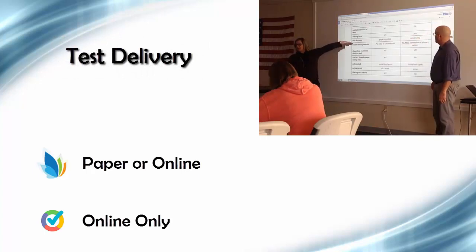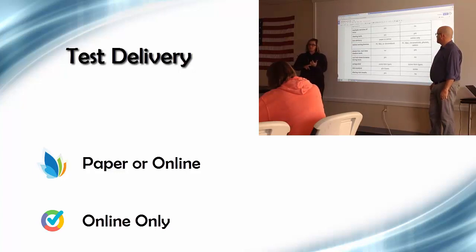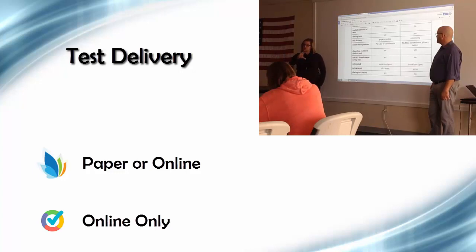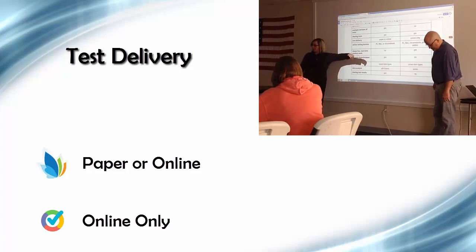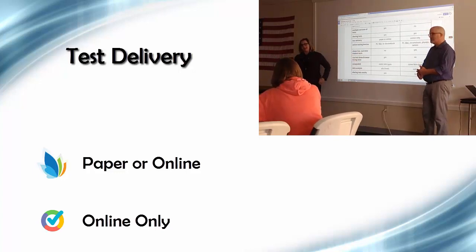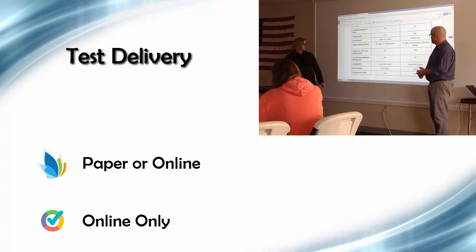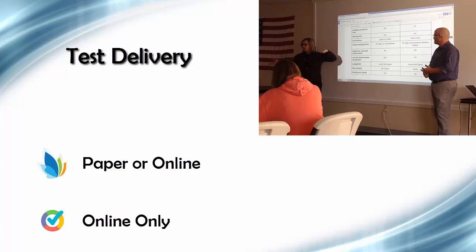Illuminate delivers tests on paper or online. You can print bubble sheets for kids — usable for multiple choice, select all that apply, or short answer where you as the instructor manually score and bubble in points. You can use an Illuminate bubble sheet as a rubric — for example, question one is 'can write a good thesis statement' for ten points. So you can use it as a rubric, a multiple choice test, or a combination of both. Or you can give the assessment online.